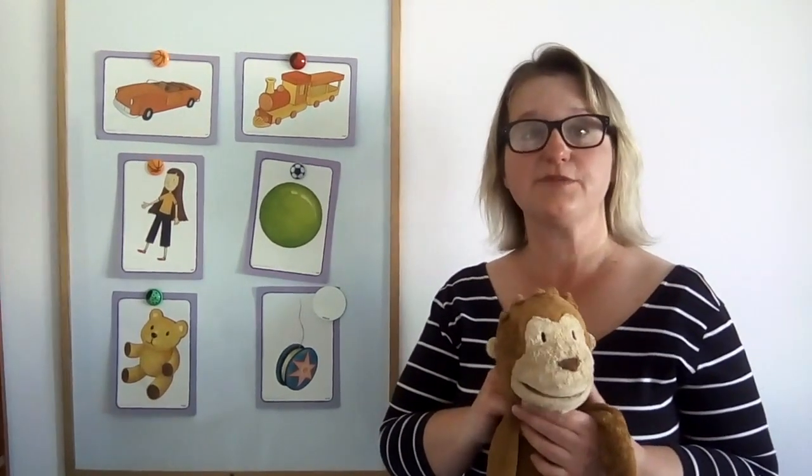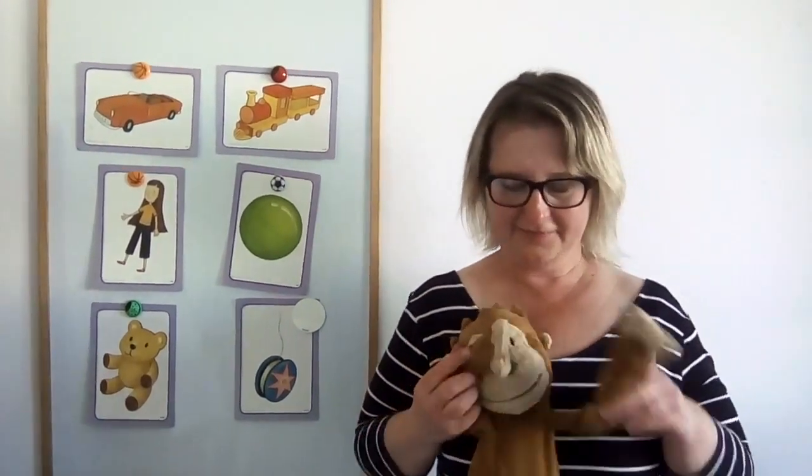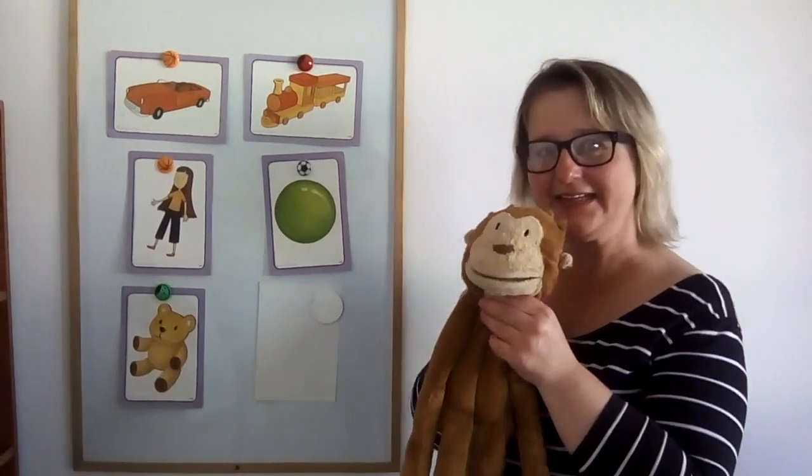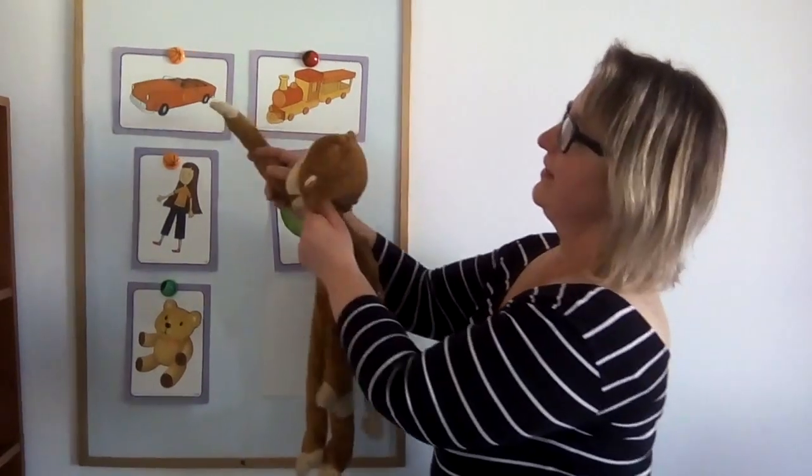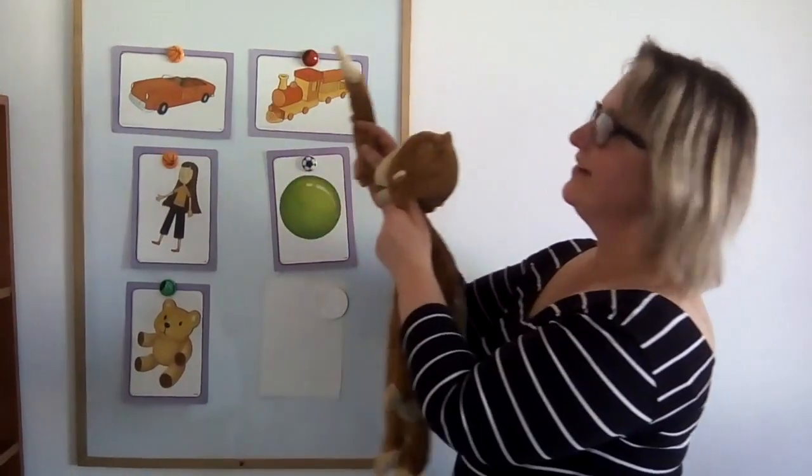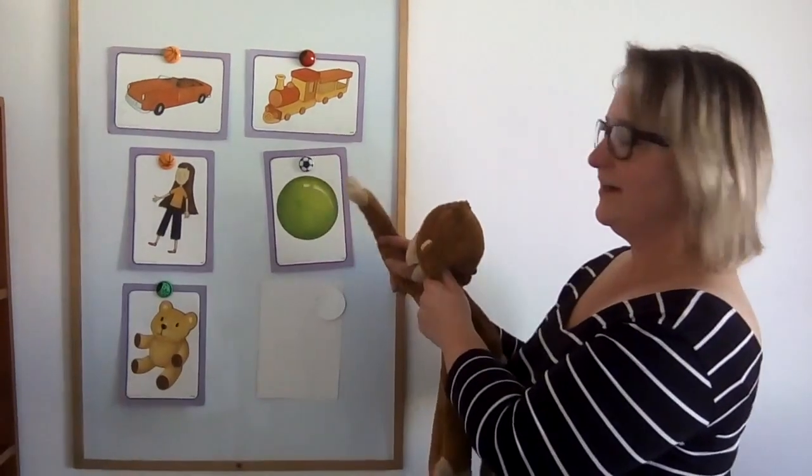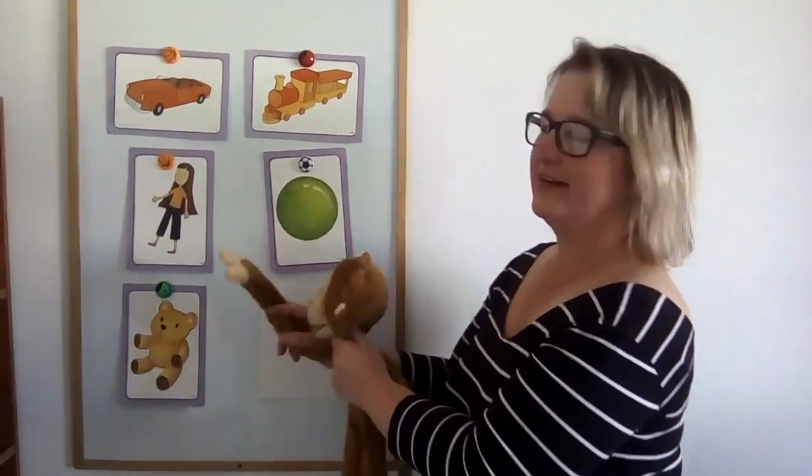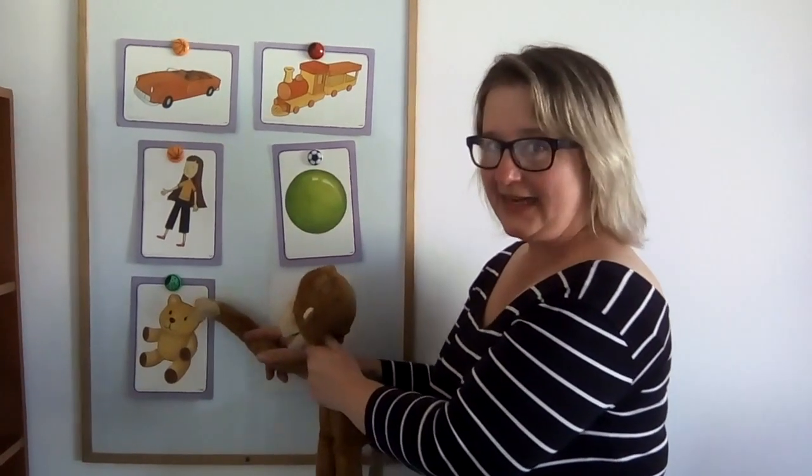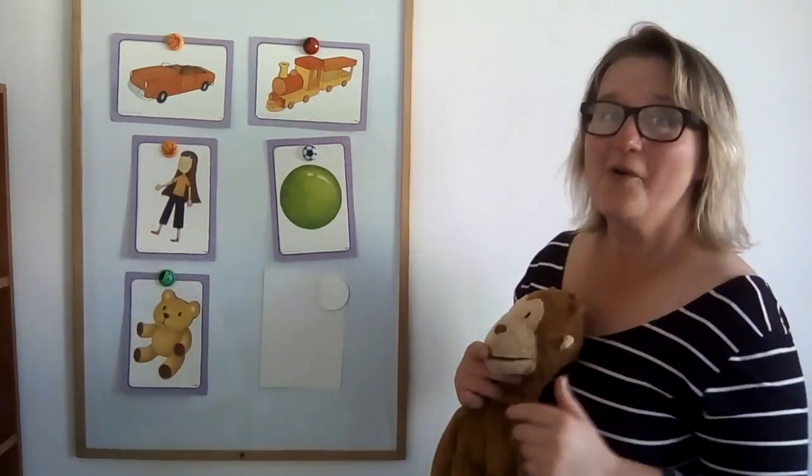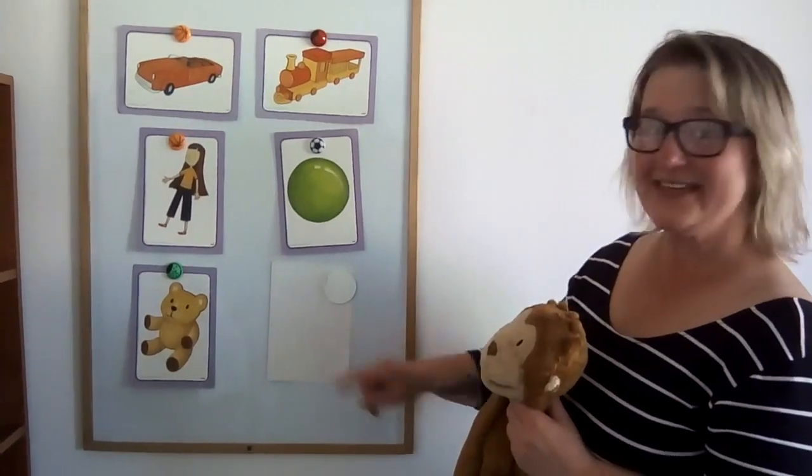Now let's read the flashcards together. But first, close your eyes, open your eyes and let's read. It's a car, a train, a doll, a ball, a teddy and... Well done! It's a yo-yo.